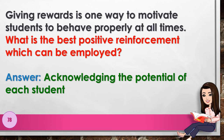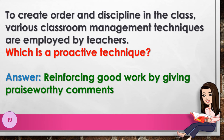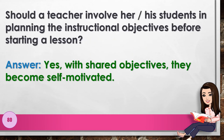Number 78: Giving rewards is one way to motivate students to behave properly at all times. What is the best positive reinforcement which can be employed? Answer: acknowledging the potential of each student. Number 79: To create order and discipline in class, various classroom management techniques are employed. Which is a proactive technique? Answer: reinforcing good work by giving praiseworthy comments. Number 80: Should a teacher involve students in planning instructional objectives before starting a lesson? Answer: yes, with shared objectives they become self-motivated.